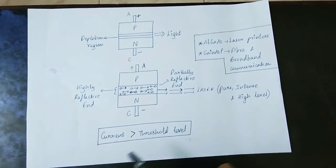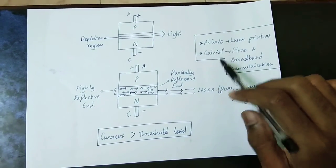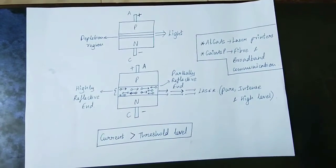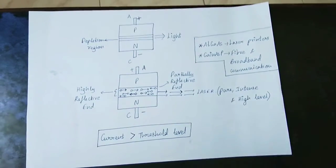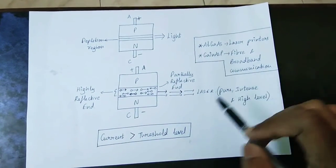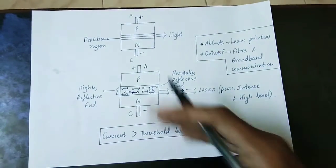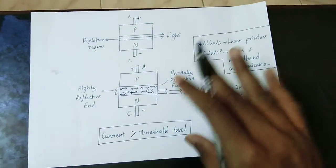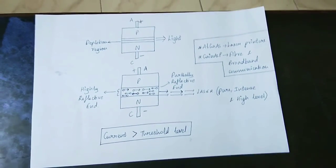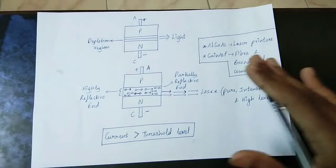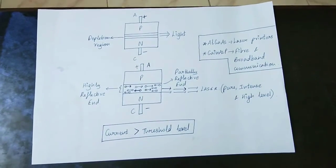The construction material is called Aluminium Gallium Arsenide (AlGaAs) or Gallium Indium Arsenide Phosphide (GaInAsP). This mixture of materials is based on gallium arsenide. These laser diodes are used in fiber optic and broadband communication. This type of construction is called a laser diode.